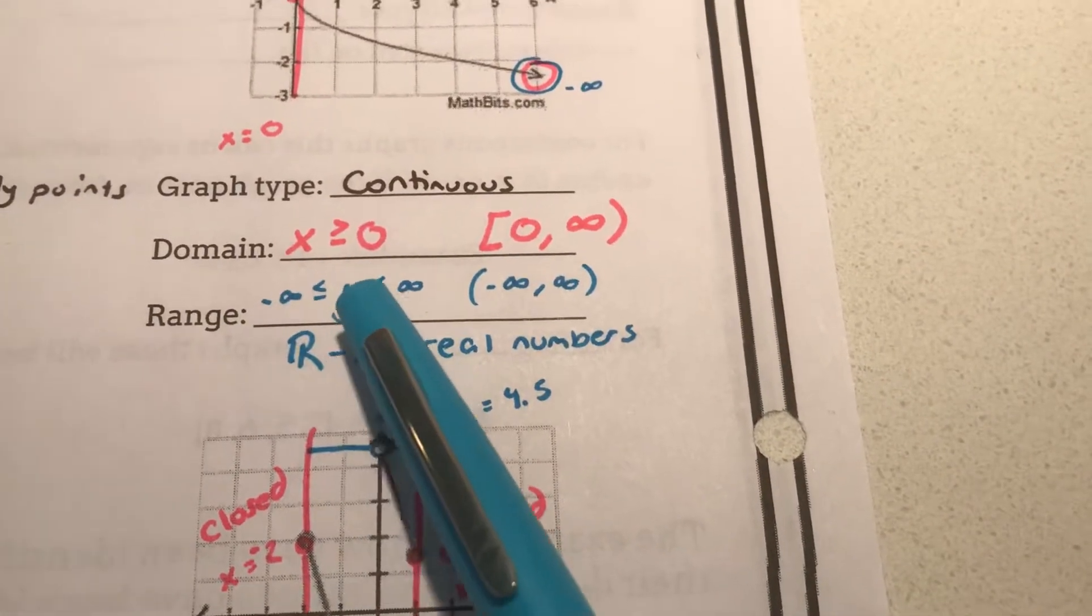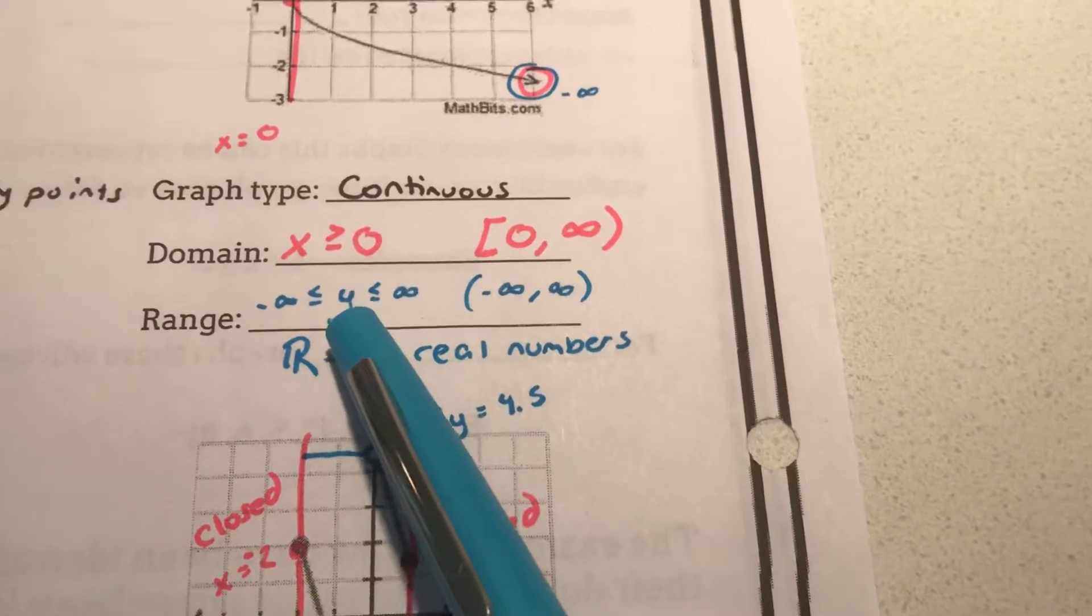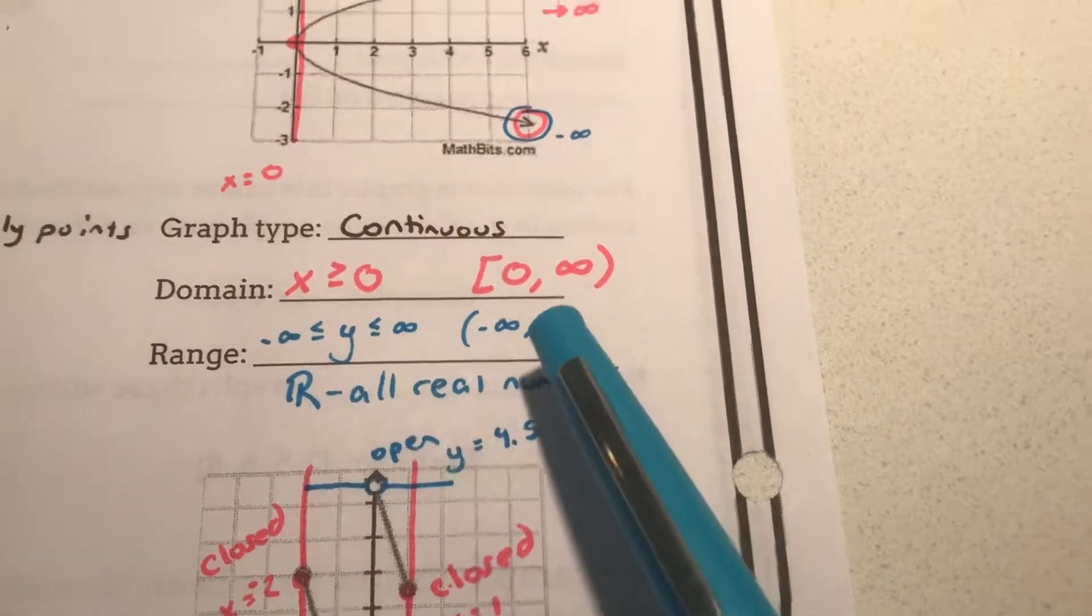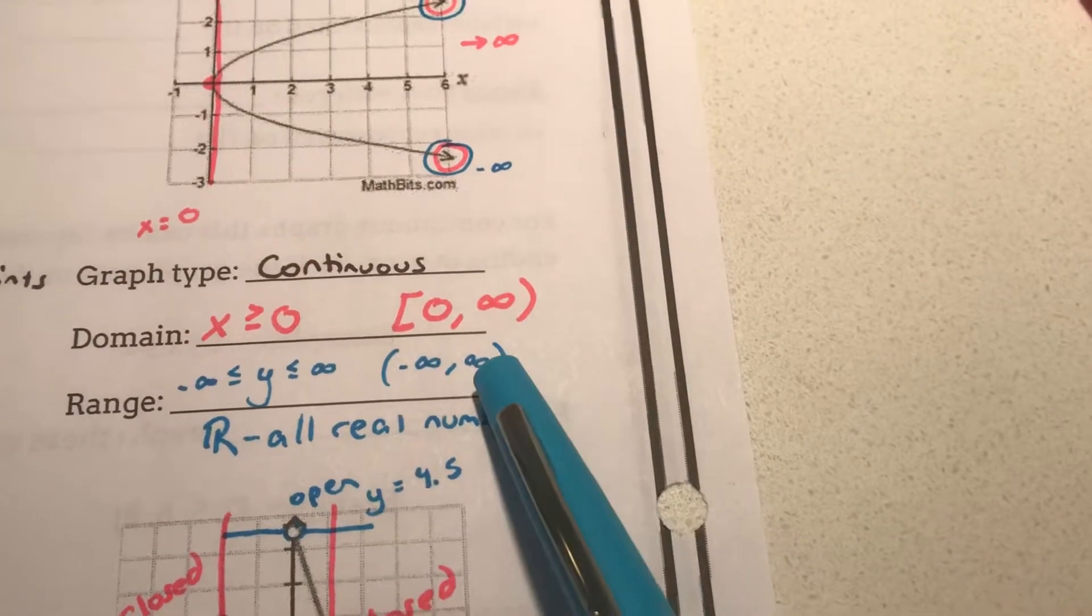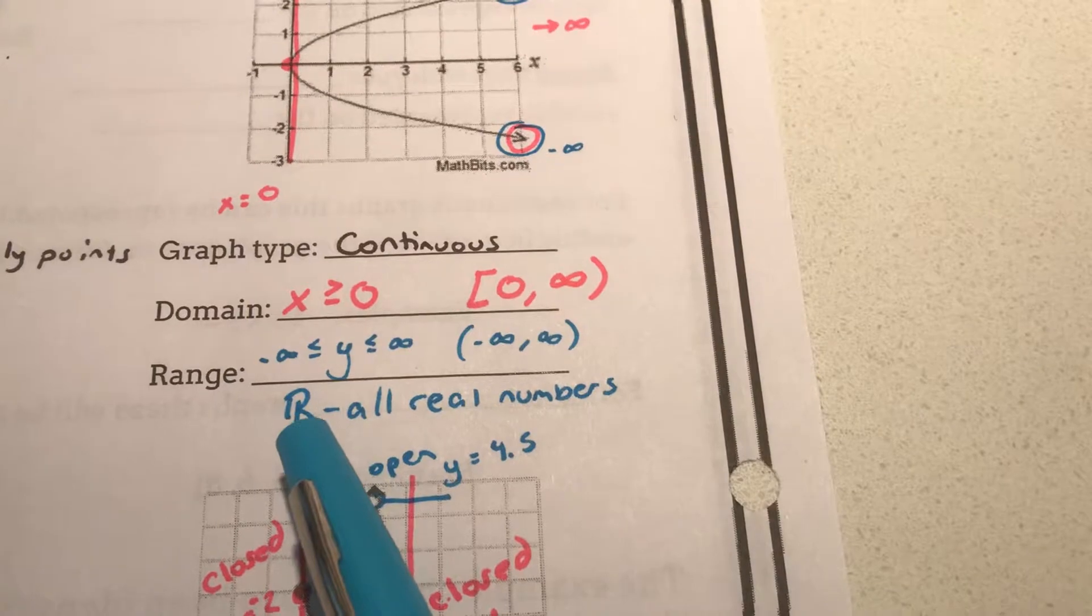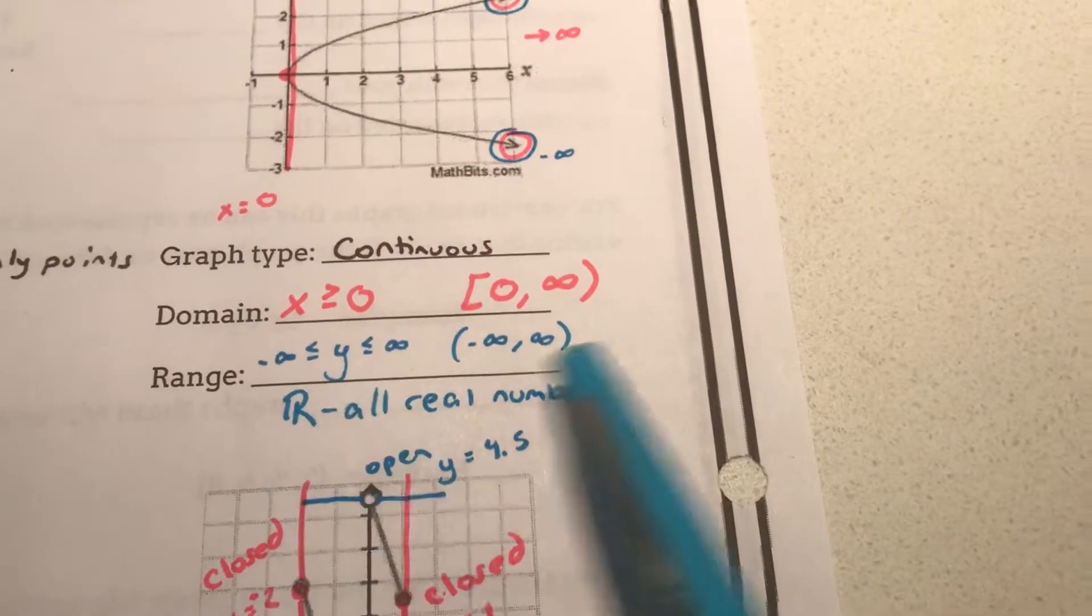So these are a lot of ways of writing it. Here's interval notation. Negative infinity is less than or equal to y, y values less than or equal to infinity. Or in set notation we can say negative infinity to infinity. I personally find it easier to say all real numbers.